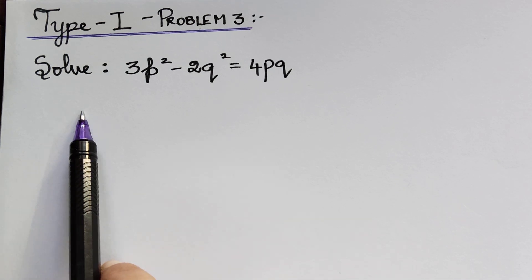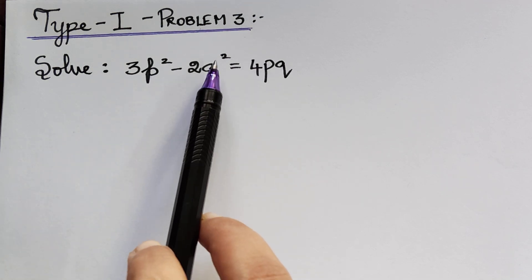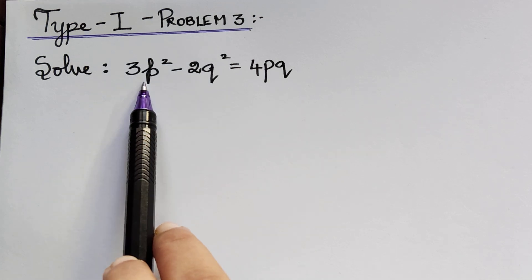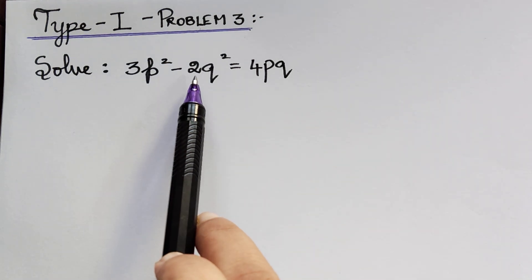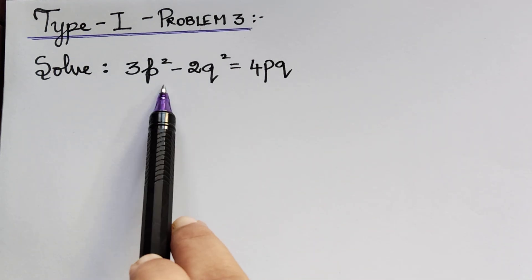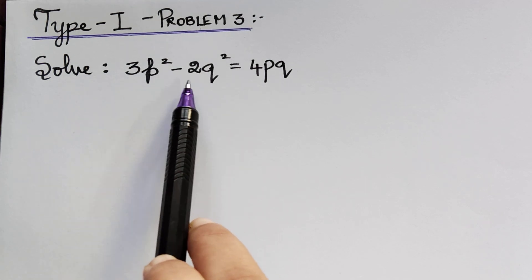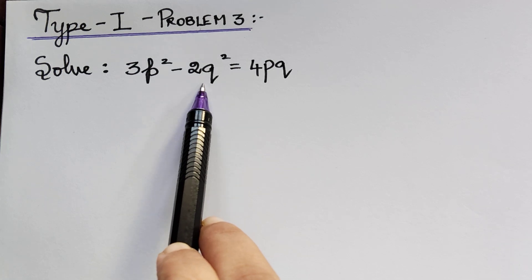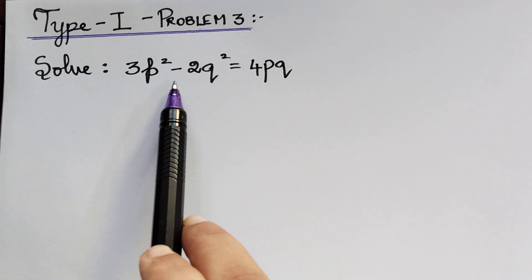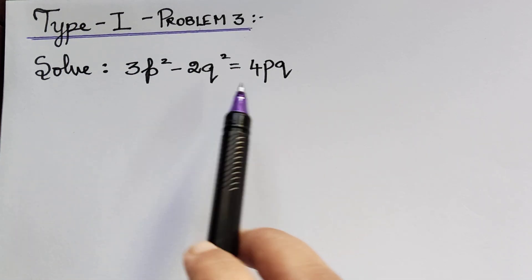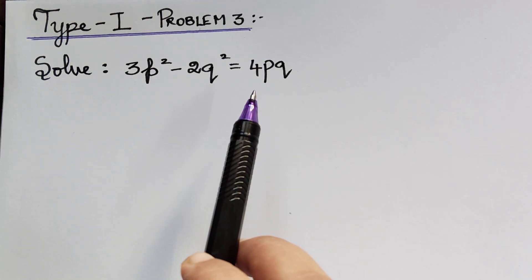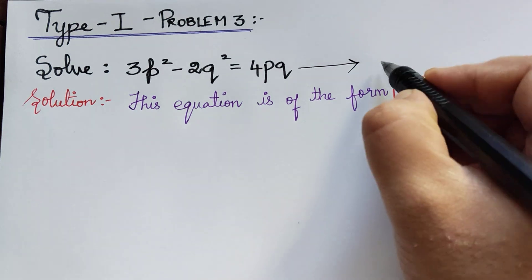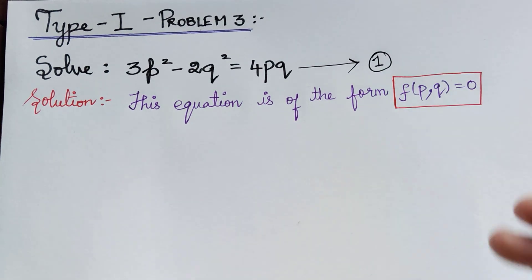The question is: solve 3p² minus 2q² equals 4pq. We observe that in this equation we have only p and q, and x, y, and z are not present explicitly. Therefore, this equation is of the form f(p, q) = 0. Let us mark the given equation as equation 1.